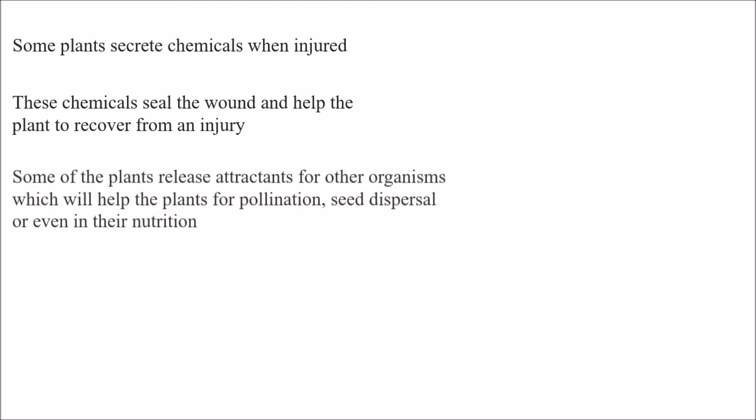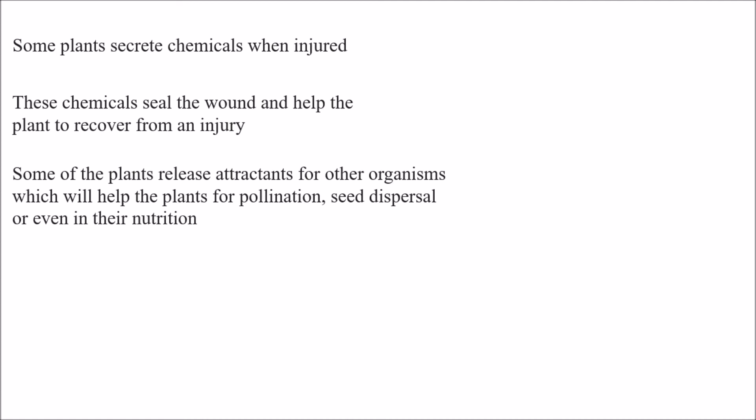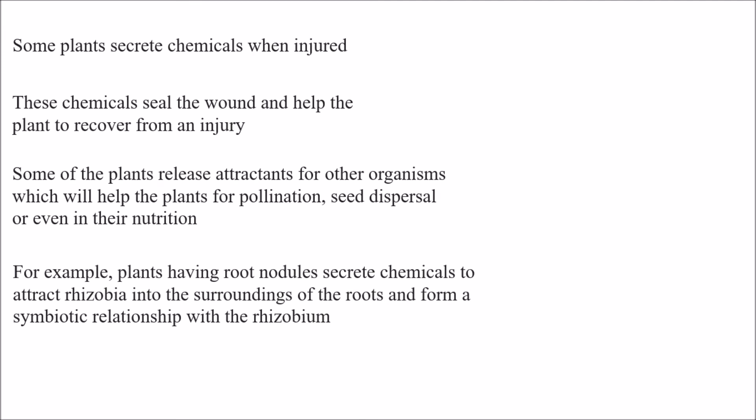Some plants release attractants for other organisms which help them in pollination, seed dispersal, or even in their nutrition. For example, plants having root nodules secrete chemicals to attract rhizobium into the surroundings of the roots, forming a symbiotic relationship with the rhizobium.